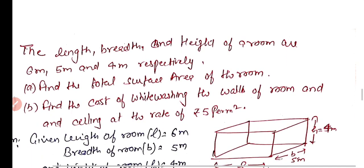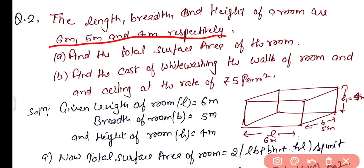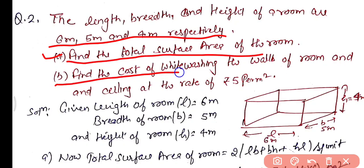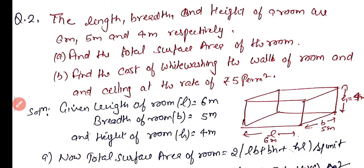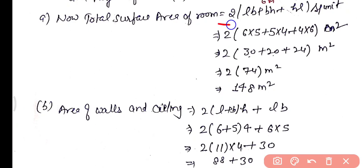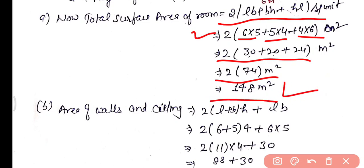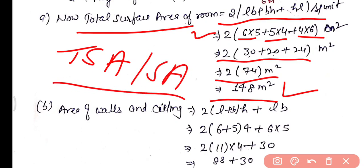Practice Question 2: The length, breadth, and height of a room are 6 m, 5 m, and 4 m respectively. Find the total surface area of the room and the cost of white washing the walls and ceiling at rupees 5 per m². Given: l = 6 m, b = 5 m, h = 4 m. Total surface area = 2(lb + bh + hl) = 2(6×5 + 5×4 + 4×6) = 2 × 74 = 148 m².